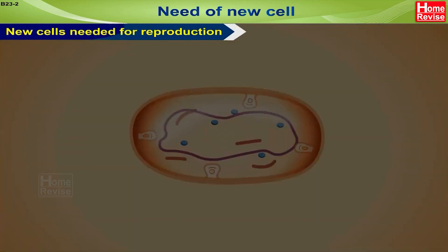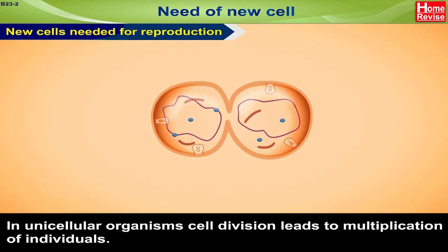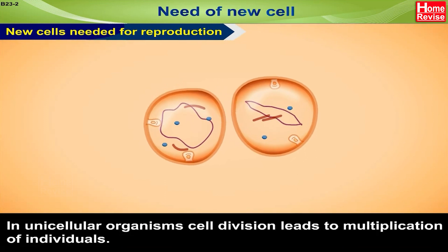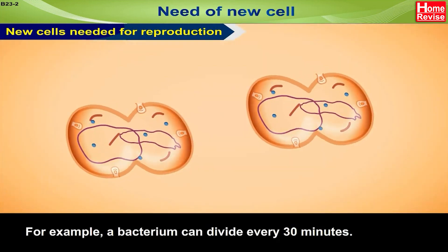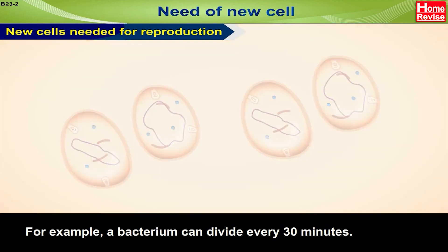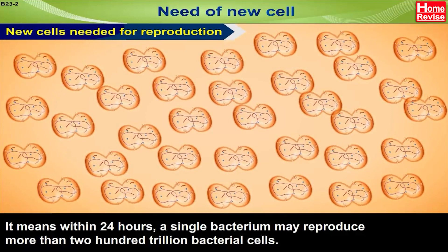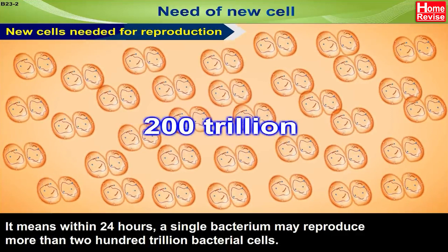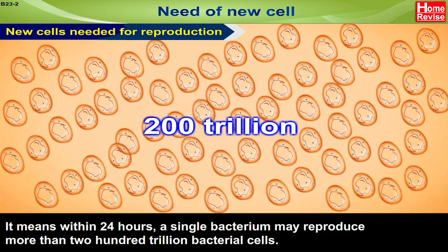Fourth, new cells are needed for reproduction. In unicellular organisms, cell division leads to multiplication of individuals. For example, a bacterium can divide every 30 minutes. This means within 24 hours, a single bacterium may reproduce more than 200 trillion bacterial cells.